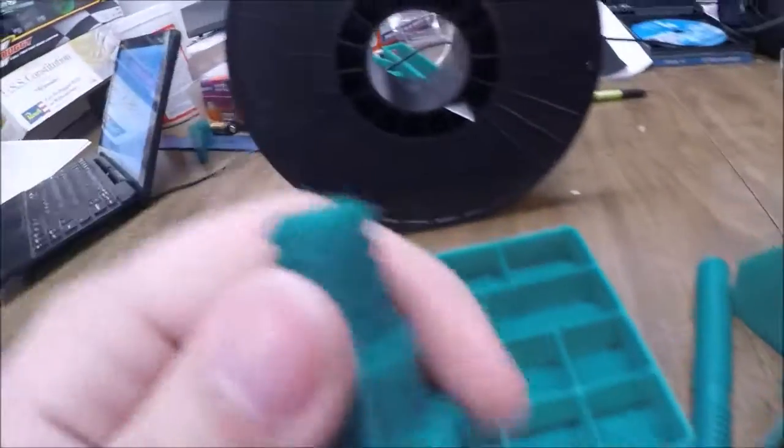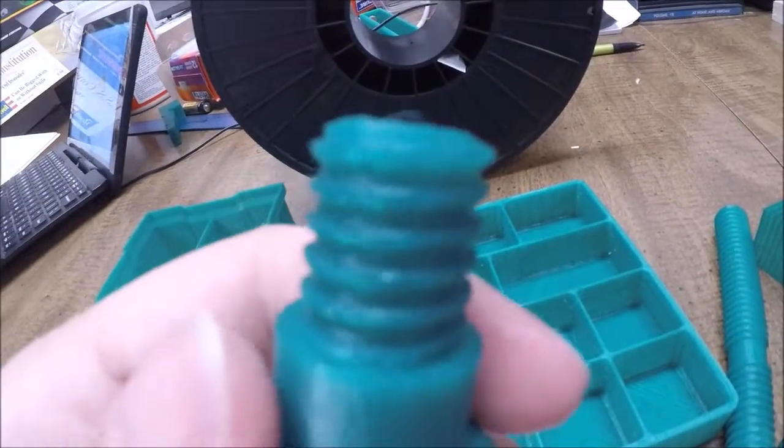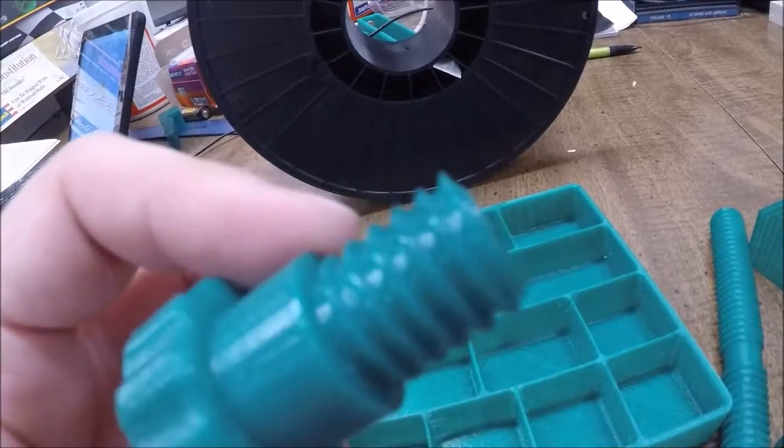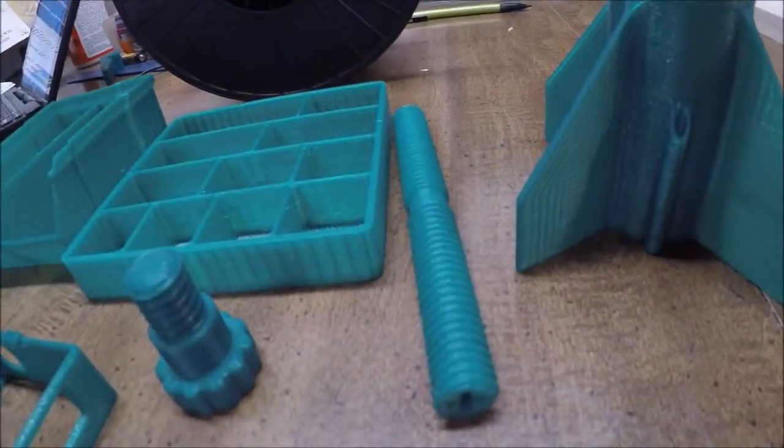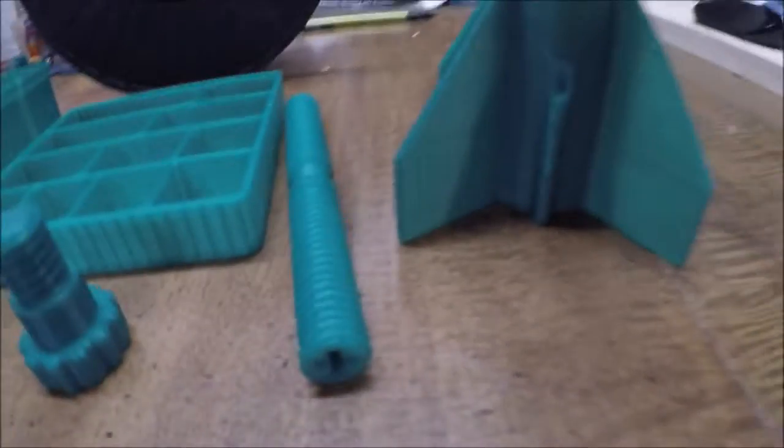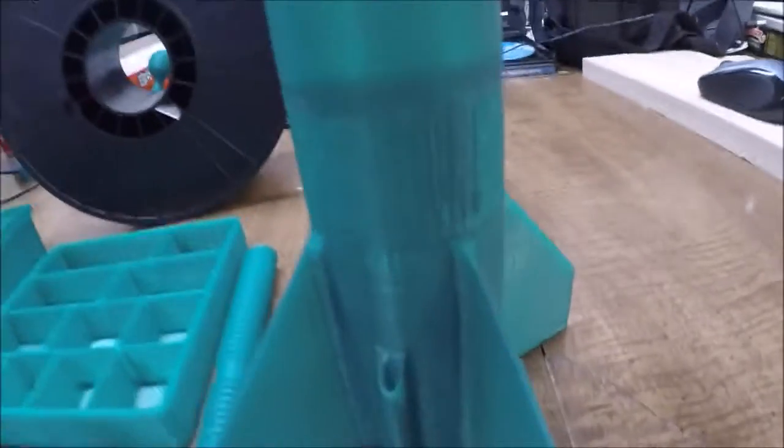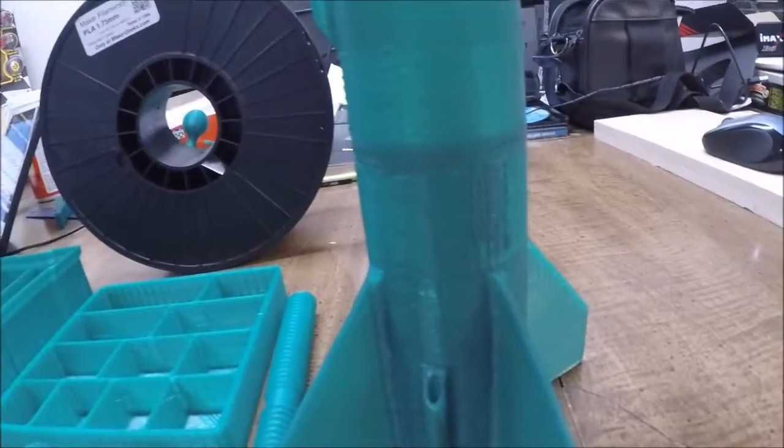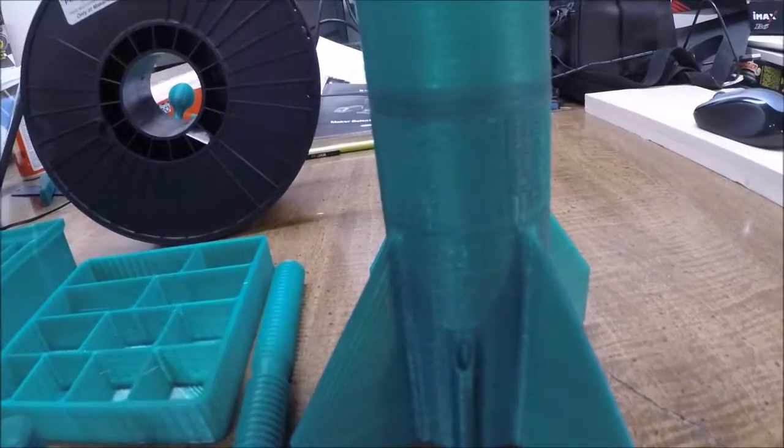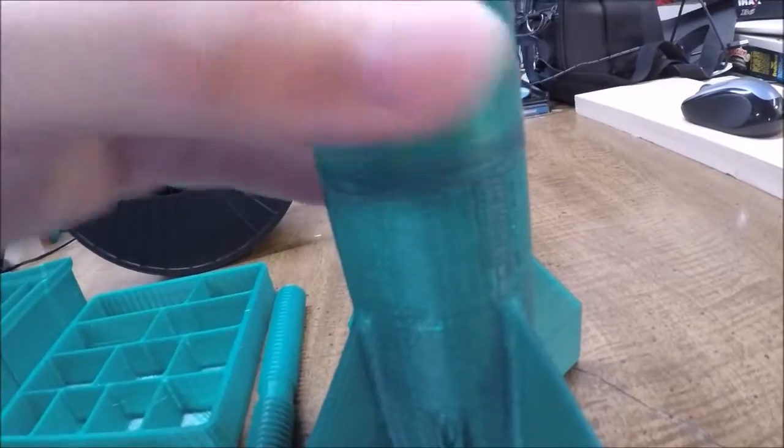It has really nice detail on some threads I did here. I had no issues with it jamming or slipping or anything like that. It just printed flawlessly. I printed this rocket out here. I had 0.3 micron layer height. It's kind of rough, but that's because of the way that I printed it out. It's just a very nice filament.